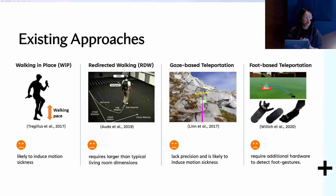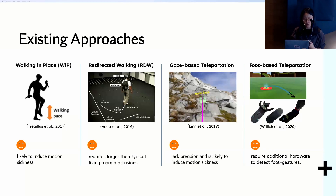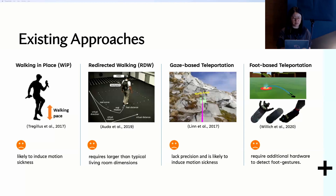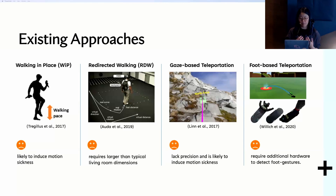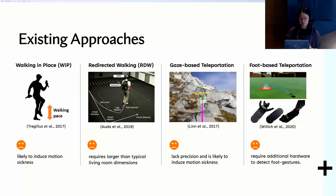Previous studies have explored alternatives to free users' hands, such as walk-in-place, redirected walking, and gaze and foot-based approaches. However, these have limitations: some may induce motion sickness, and some require expensive additional hardware, preventing them from being widely used in current VR skill training applications. The goal of our study is to develop a locomotion approach that enables users to move around in a virtual training environment without interrupting their primary hand-based task, achievable in a limited physical space.